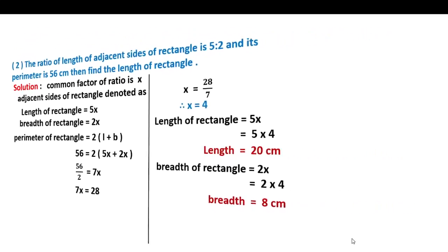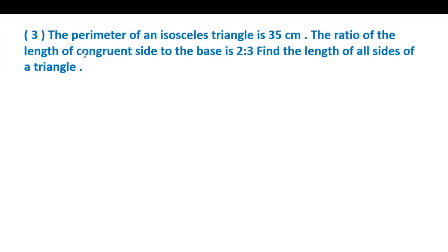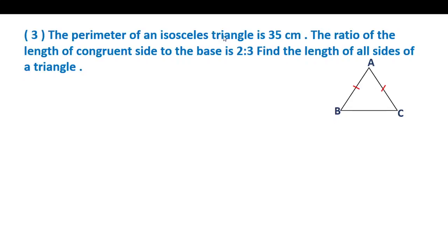Third example: the perimeter of an isosceles triangle is 35 cm. The ratio of the length of the congruent sides to the base is 2 is to 3. Find the length of all sides of the triangle. This is a word problem. For an isosceles triangle ABC, the two equal sides are AB and AC. The perimeter is given as 35, meaning the sum of all three sides.